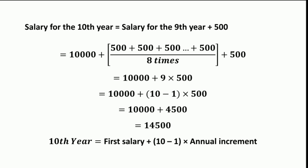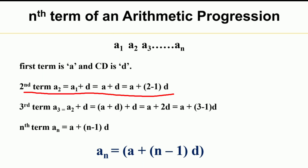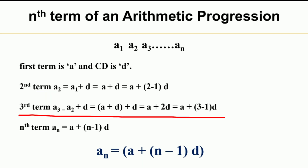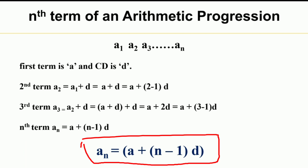So the 10th year salary is the first year salary (10,000) plus (N minus 1), which is (10 minus 1), times the annual increment. This example gives us an idea of how to write the 10th term, 15th term, 25th term, or 30th term, and more generally the Nth term of an arithmetic progression. Let us consider A1, A2, A3, up to AN as an arithmetic progression whose first term is A1 = A and the common difference is D. Then the second term A2 equals A1 plus D, which we can rewrite as A plus (2 minus 1) × D. Similarly, A3 equals A2 plus D, which equals A plus D plus D, that is A plus 2D, or A plus (3 minus 1) × D. So the nth term AN equals A plus (N minus 1) × D.